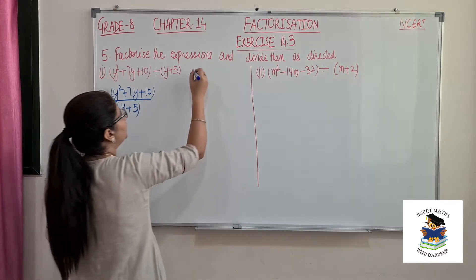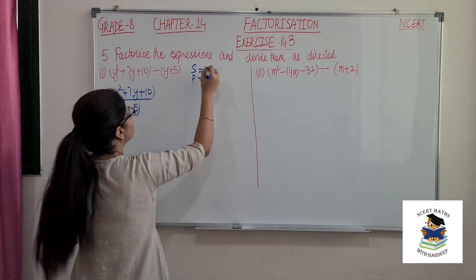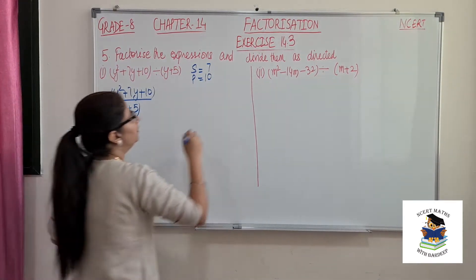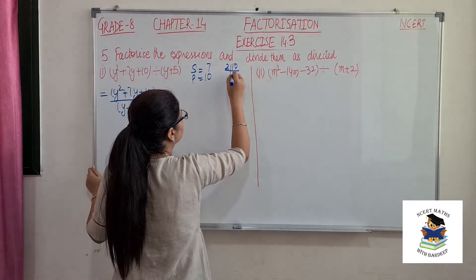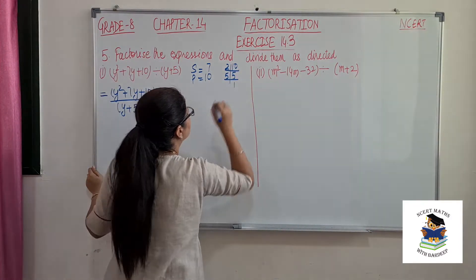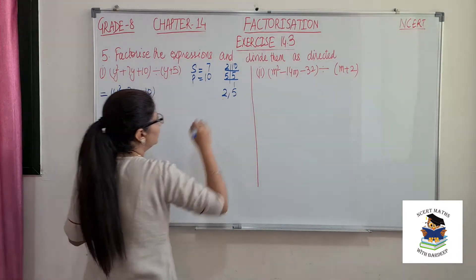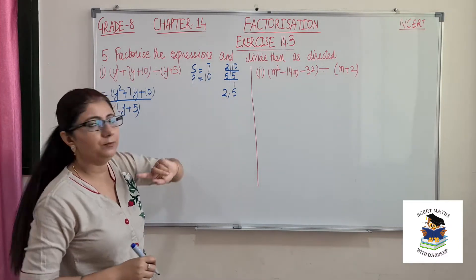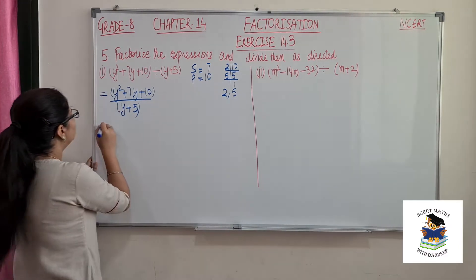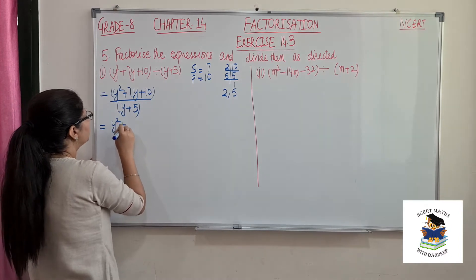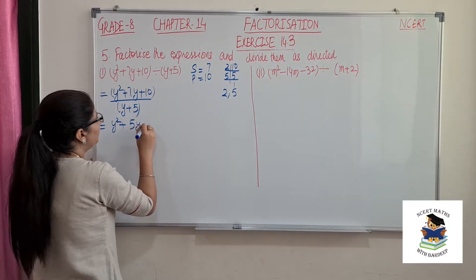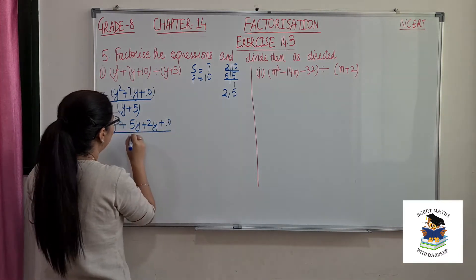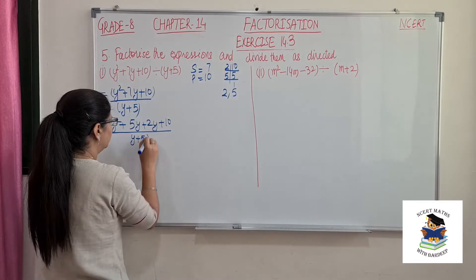For splitting, we need sum 7 and product 10. The factors of 10 are 5 and 2. Since 2 plus 5 gives 7 and 2 times 5 gives 10, we split to write: y squared plus 5y plus 2y plus 10 over y plus 5.